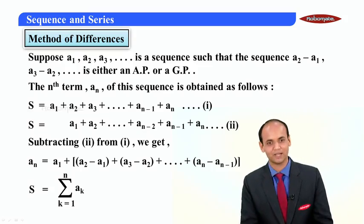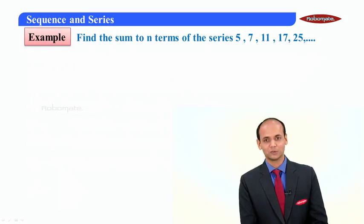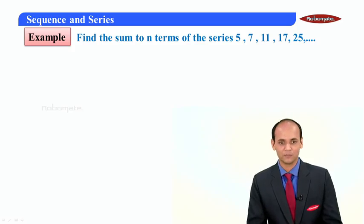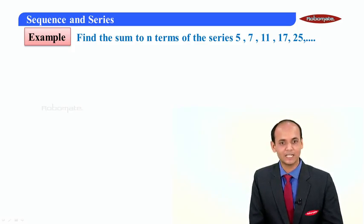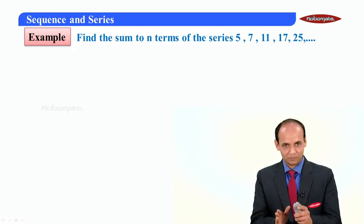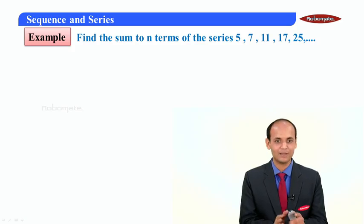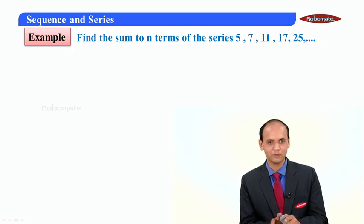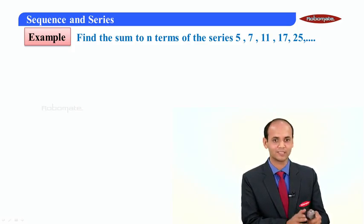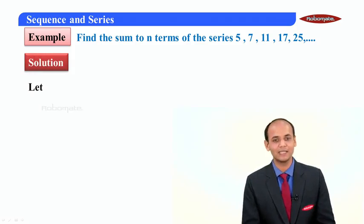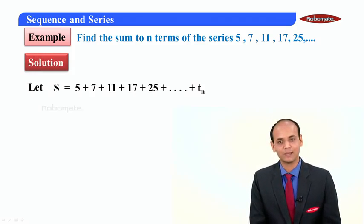Let us take an example to understand this. I am given the series 5, 7, 11, 17, 25, and so on, and I want to find the sum of n terms. Note that the difference between 7 and 5 is 2, between 11 and 7 is 4, and between 17 and 11 is 6. So the differences are 2, 4, 6, and so on, which form an AP. Therefore, to find the nth term, I will use the method of difference.